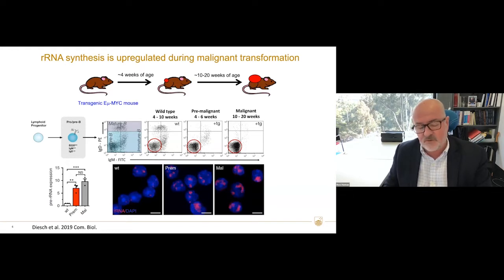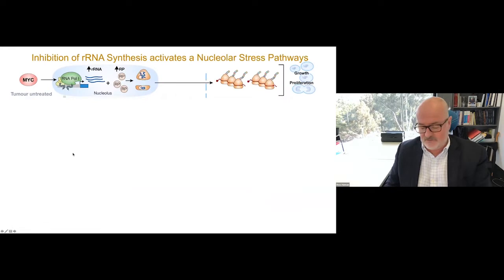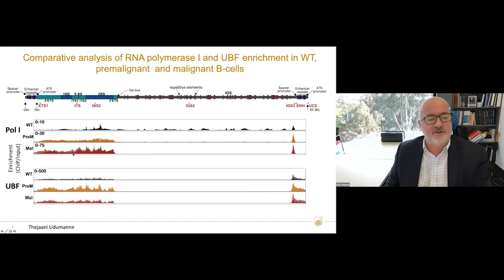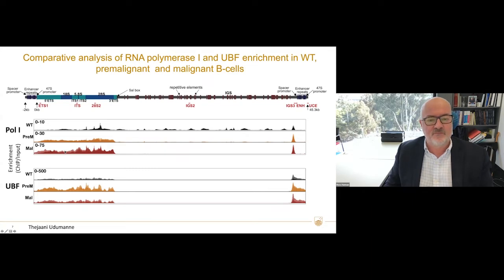This significant upregulation of ribosomal RNA in cancer is the reason why we thought it might be a good target. A whole-genome ChIP assay for wild-type, pre-malignant, and malignant cells across the transcribed region shows a significant increase in ribosomal RNA, confirming what's driving this increased transcription.